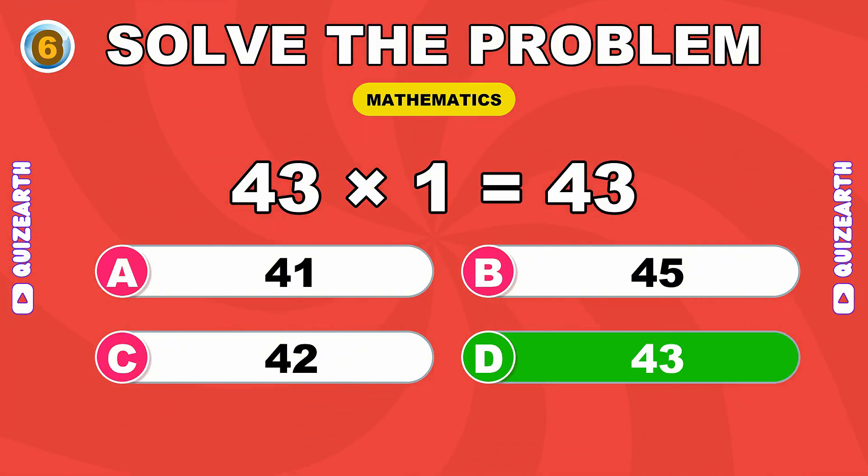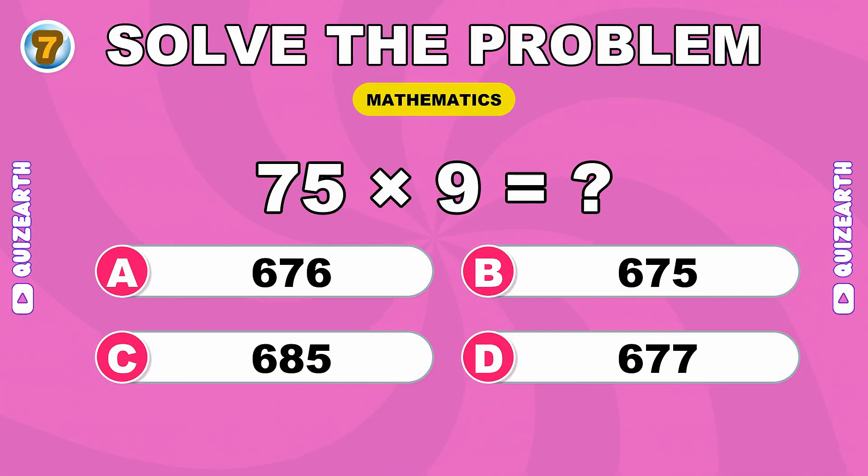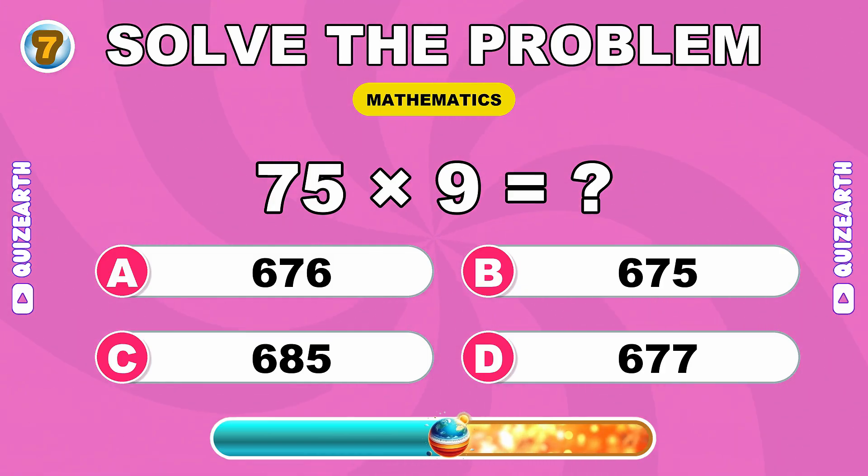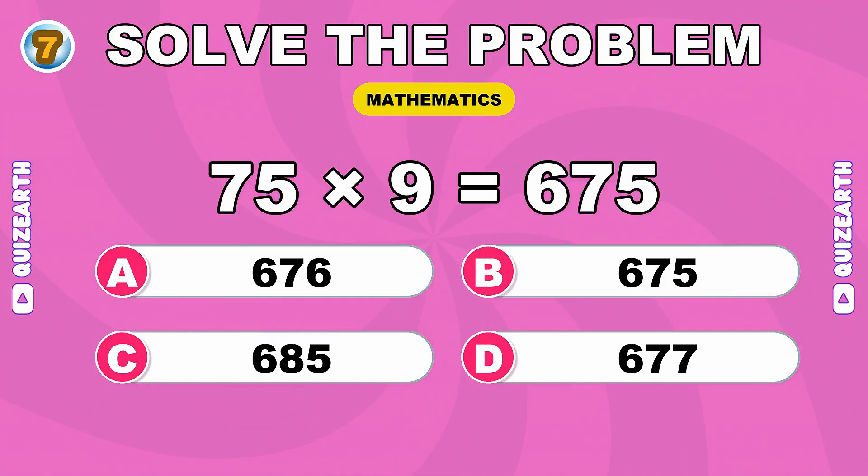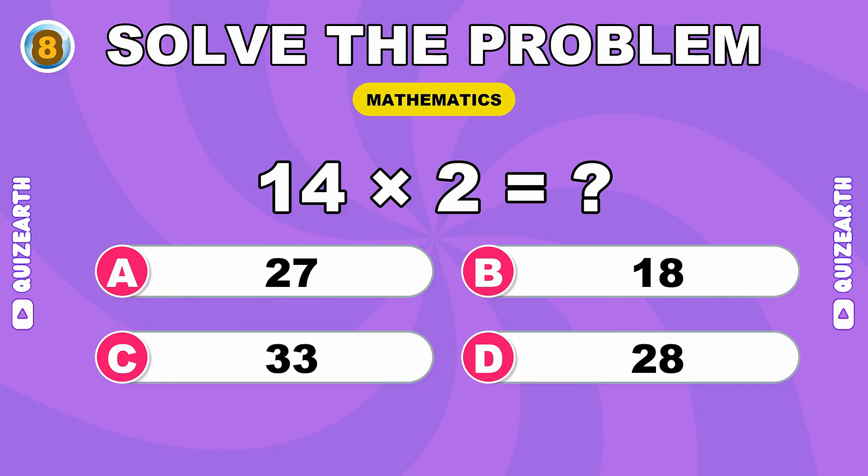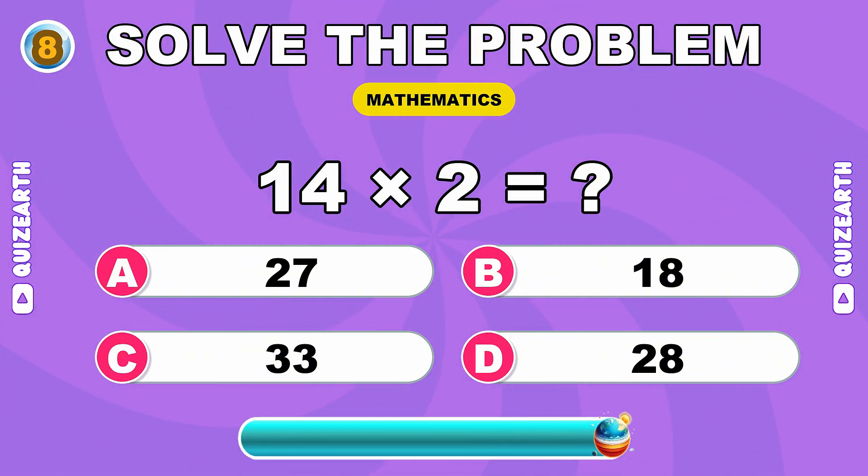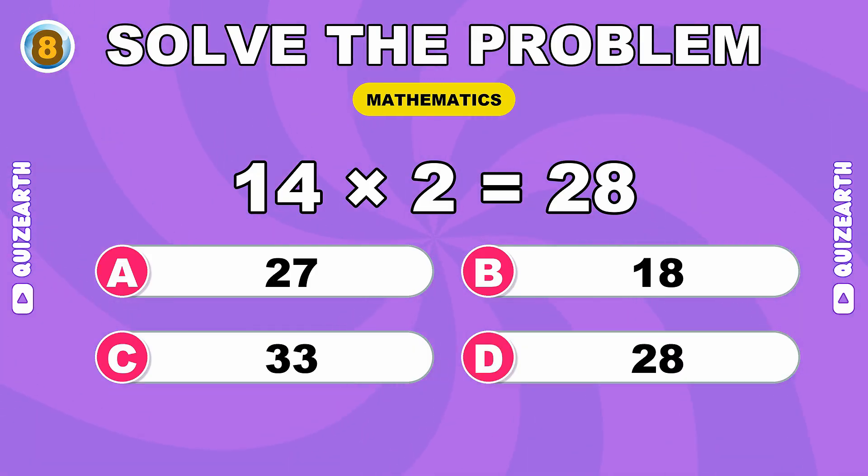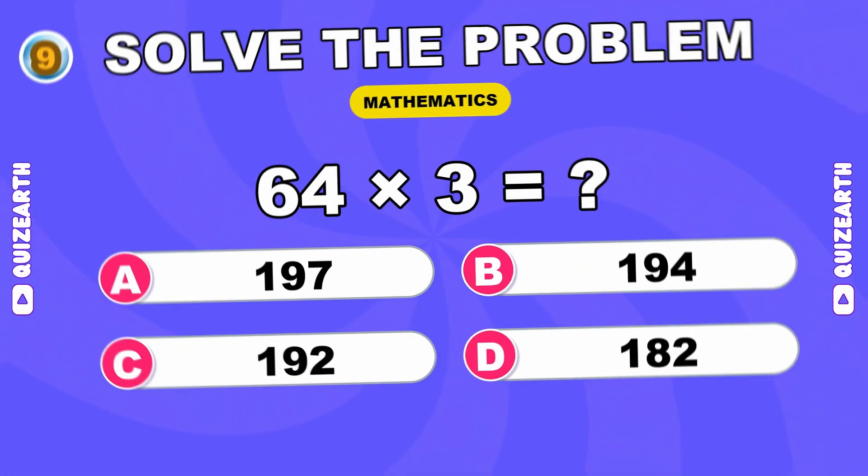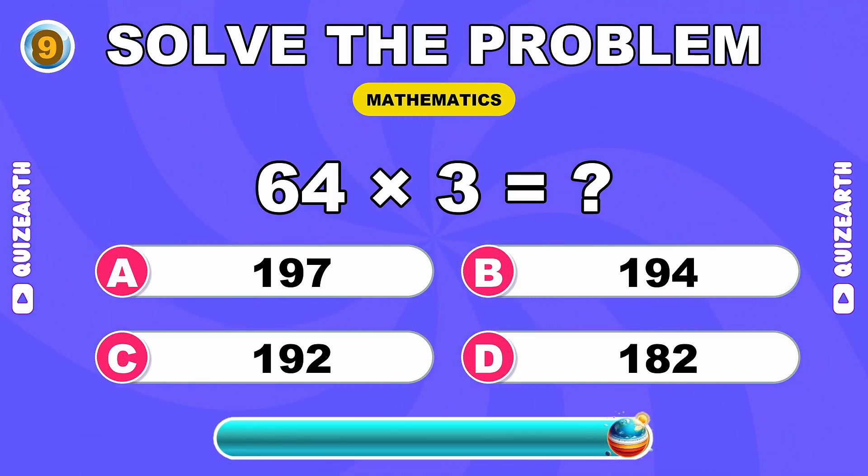What do you get when you multiply 43 by 1? Fantastic, 43. How much is 75 times 9? Keep rolling, 675. What is 14 times 2?